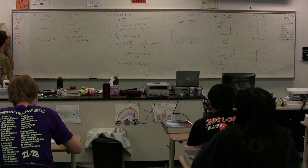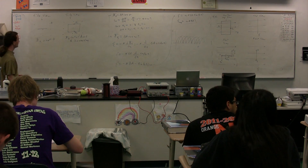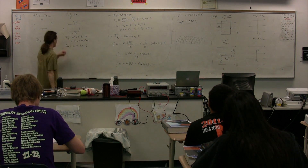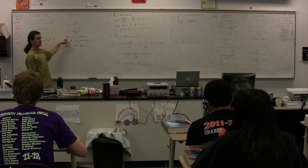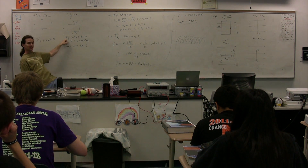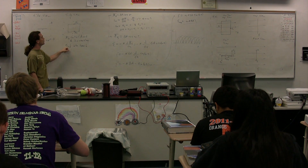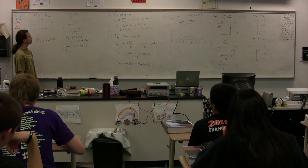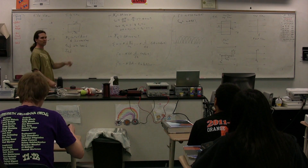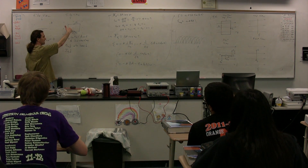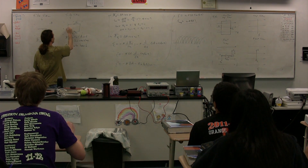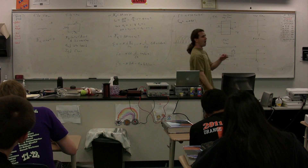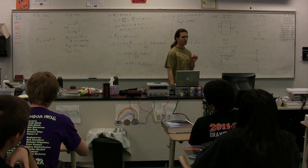Therefore, according to Lenz's law — the concept of electromagnetic inertia, the resistance to that change in magnetic flux — we have an induced magnetic flux which is into the board. So the direction of the induced current: if the induced magnetic field is into the board, the induced current is going to be clockwise. Notice the induced current is opposite the direction of the current we put into the loop to cause it to turn.